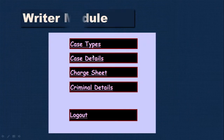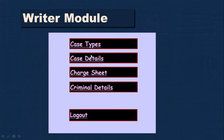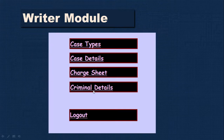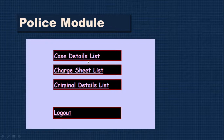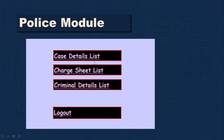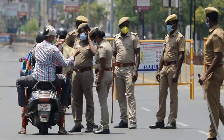The writer module allows the writer to enter case types and case details, register the case, write the charge sheet, and write criminal details — these are the four forms they can enter data in. Then there is the police module, where the police inspector can view all data entered by the writer: case details, charge sheet, and criminal details. These are the three main details across the modules and their options.